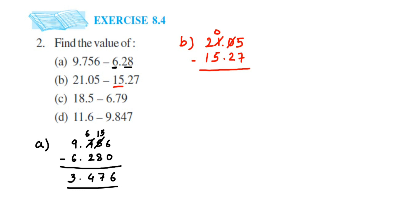So 1 becomes 0, the 0 becomes 9, and this becomes 15. 15 minus 7 is 8, and 9 minus 2 is 7. Place the decimal point. Now 0 minus 5 — we cannot do it, so take a borrow from 2; 2 becomes 1 and 0 becomes 10. 10 minus 5 is 5, and 1 minus 1 is 0. So the answer is 5.78.